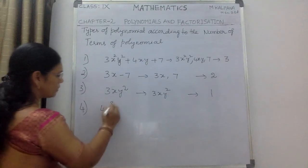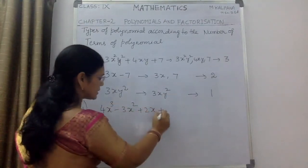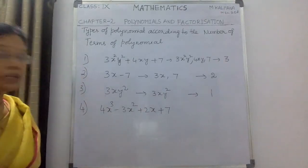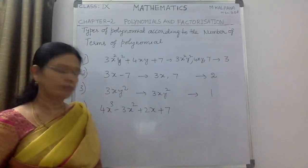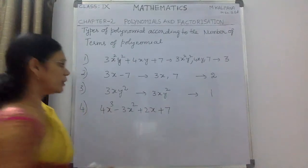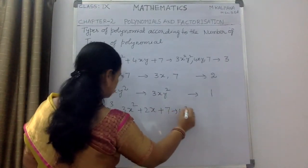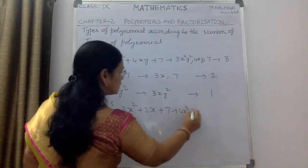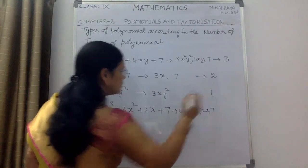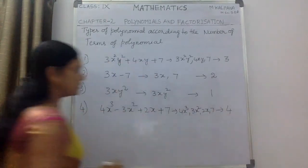I am taking this example: 4x³ - 3x² + 2x + 7. How many number of terms are there, children? The terms are 4x³, 3x², 2x, and 7. So there are 4 terms.